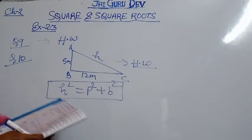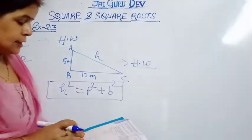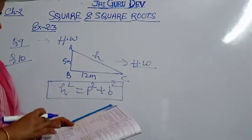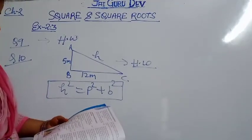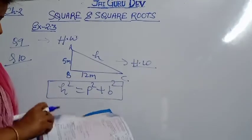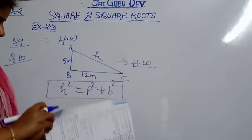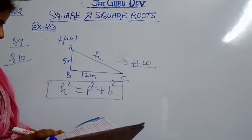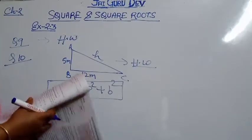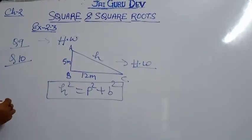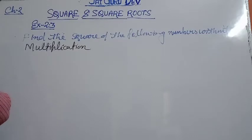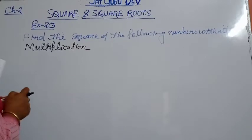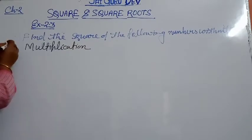Now one last pattern of questions is also given — not in your exercise but in the example section on page number 24 of your book. These kinds of questions are very important for your learning and come in exams. I am going to explain how to solve them.